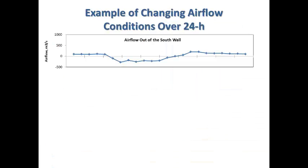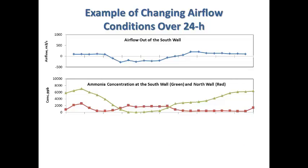That's a lot of information coming in, so I want to give you a snapshot of how it looks and how it comes together to get to emission. This is an example — a 24-hour snapshot of airflow data. These positive numbers indicate a north wind, and negative airflow means a south wind. So when it's a north wind, the north wall is our inlet and our south wall is the outlet. Looking at the corresponding concentration data, our basic assumptions were holding true — luckily.